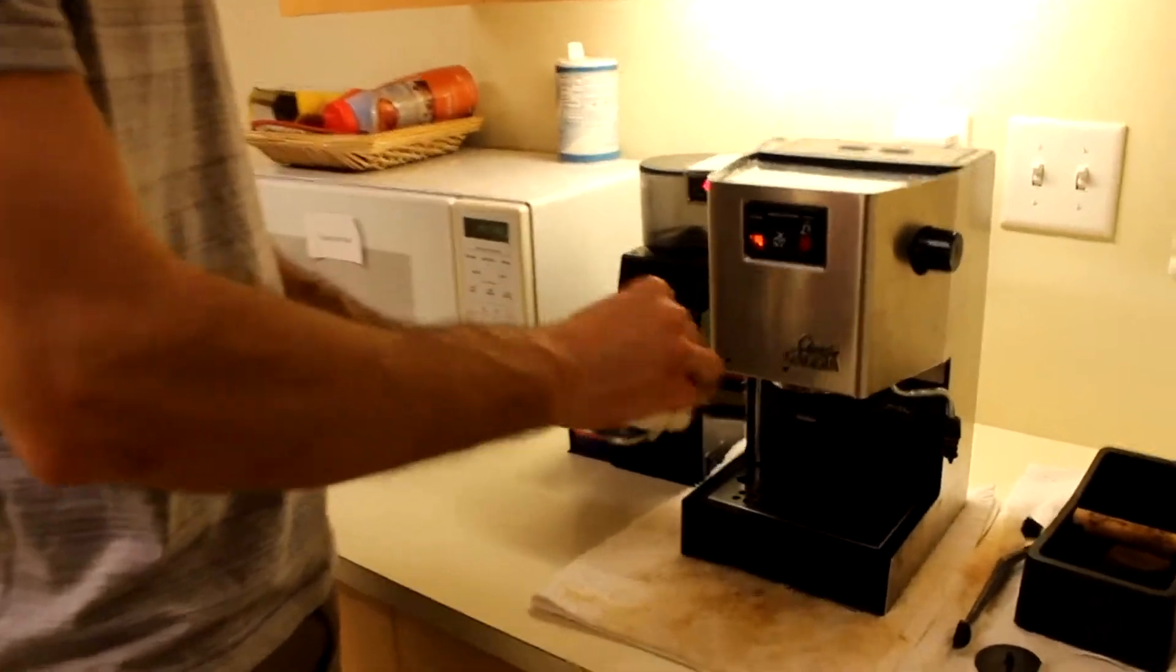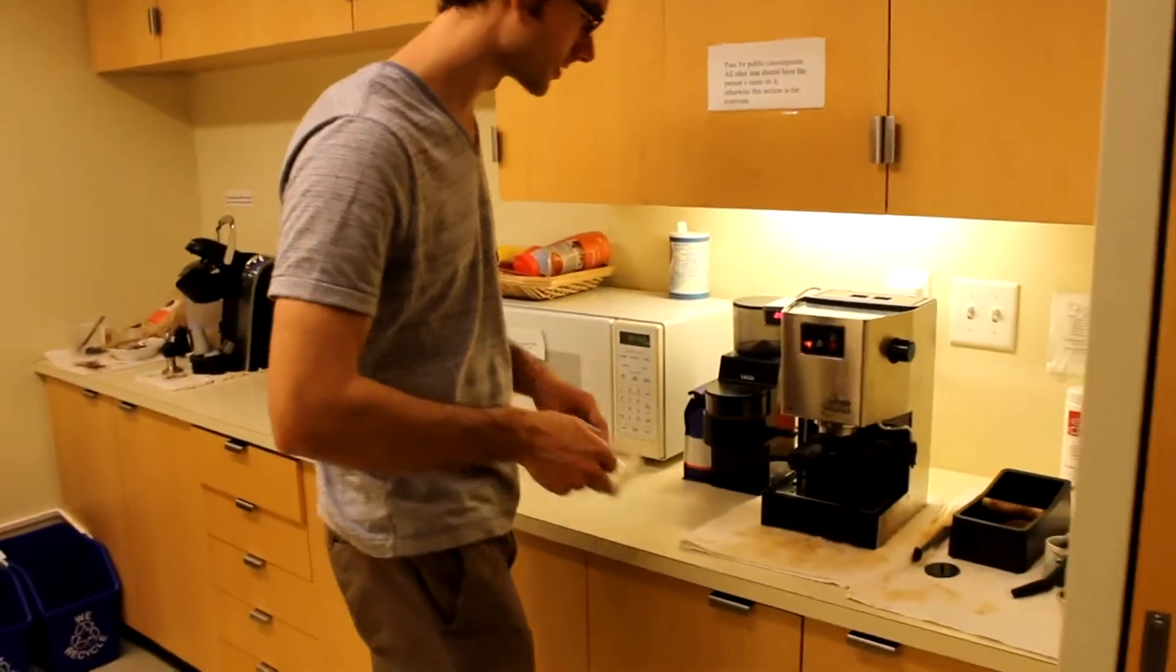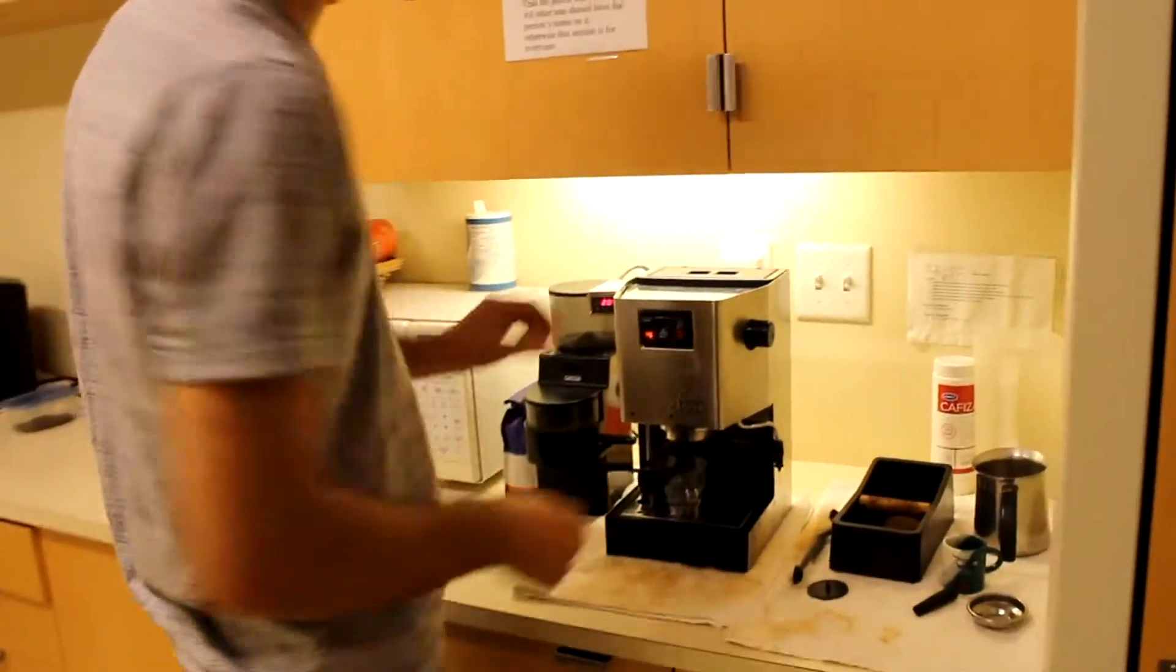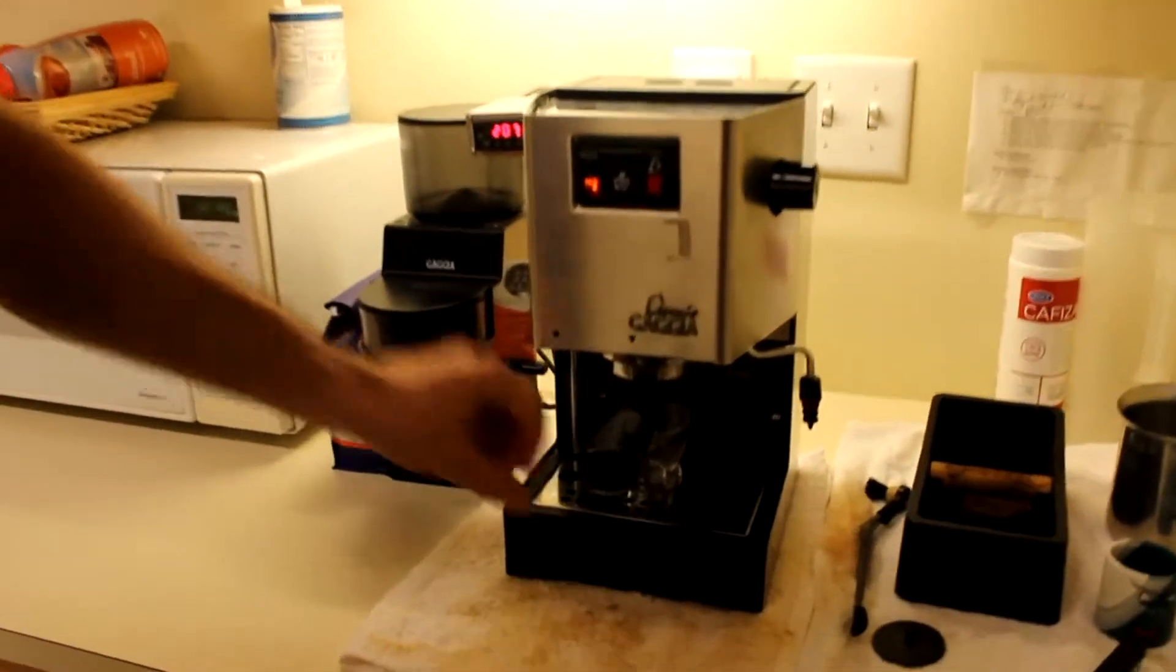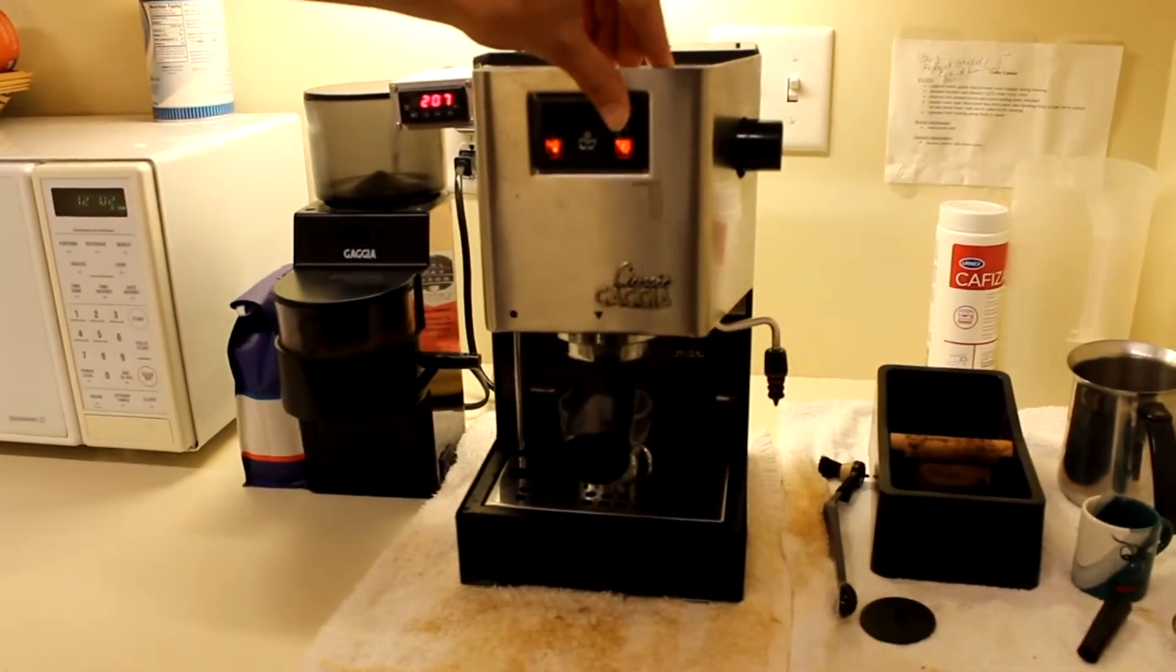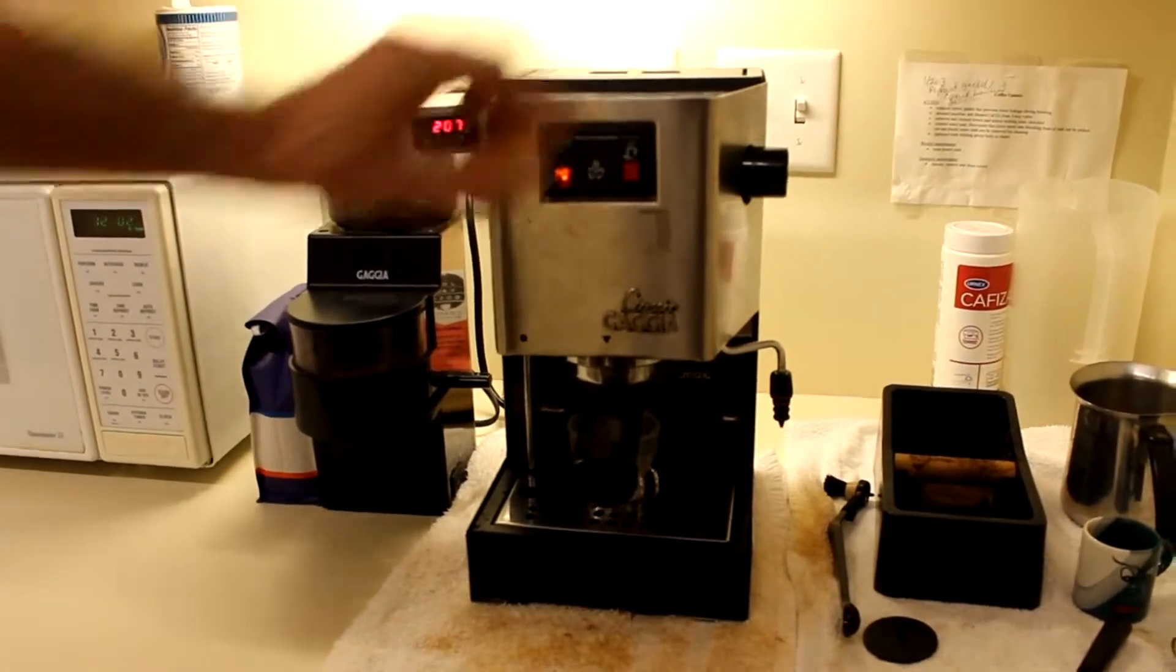Dry everything off. The first thing you want to do to make an espresso is make sure everything's hot. The machine's been on and warming up. Next, I'm going to run hot water through the portafilter into the cup.